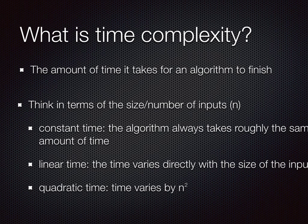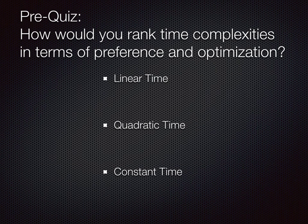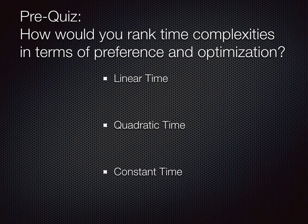So with that said, a little pre-quiz. How would you rank time complexities in terms of preference and optimization? That is, which one would you want to ideally have, and which one might be the least ideal? I'll give you a couple seconds here to rank them however you see fit.